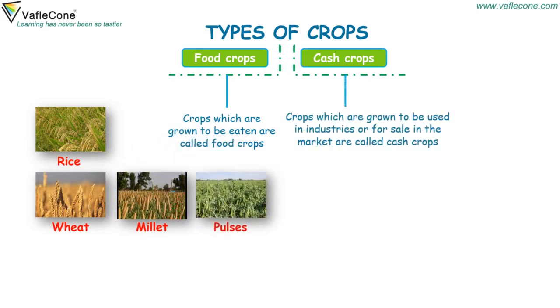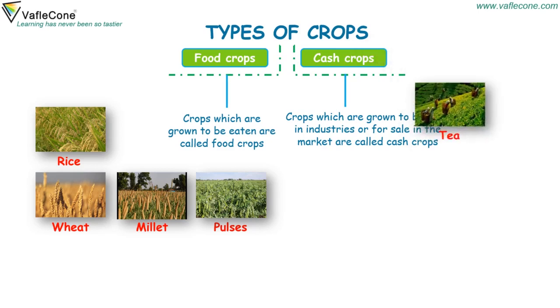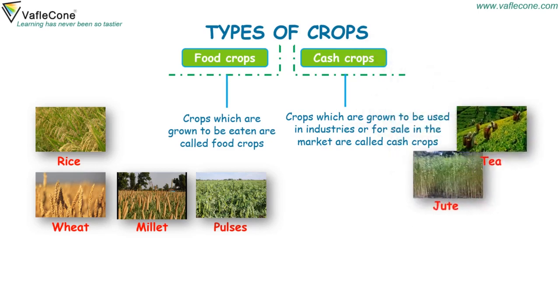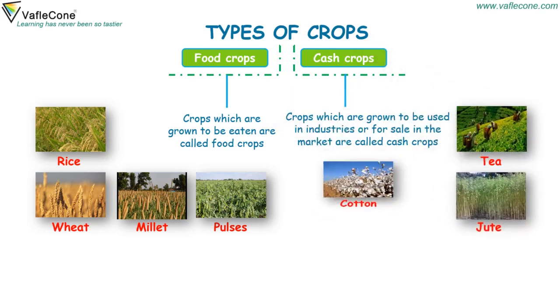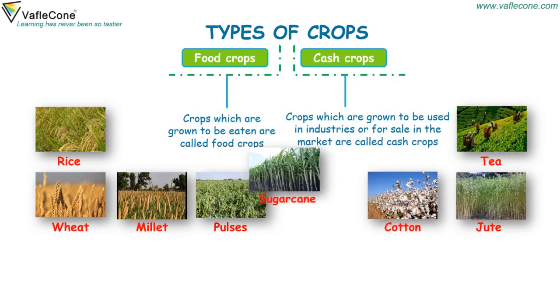Crops which are grown to be used in industries or for sale in the market are called cash crops. For example, tea, jute, cotton and sugar cane.